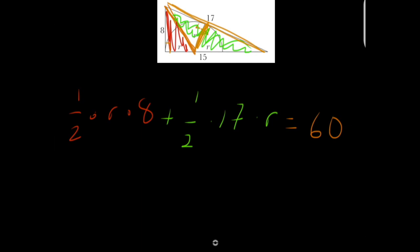Then solving this is pretty straightforward. It becomes 8r over 2 plus 17r over 2, or 25r over 2 is equal to 60. And yet again, we get r equals 120 over 25, which is 4.8.